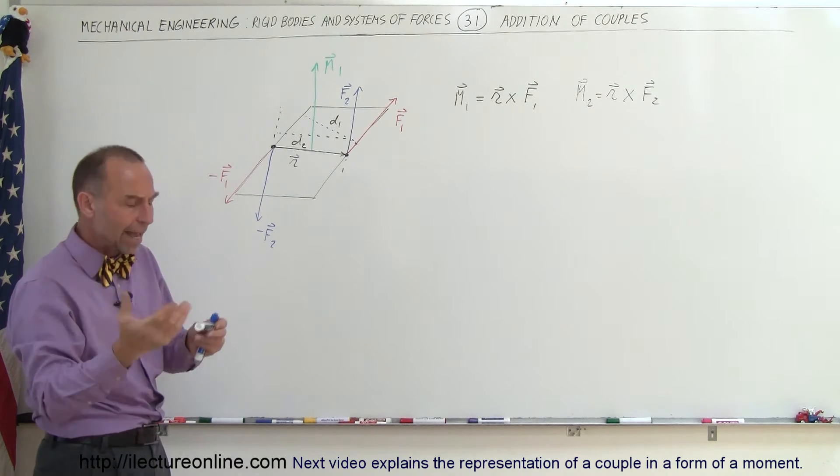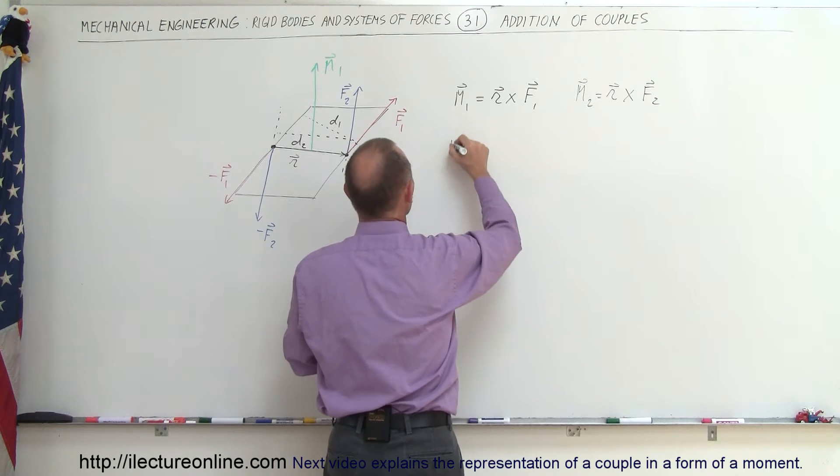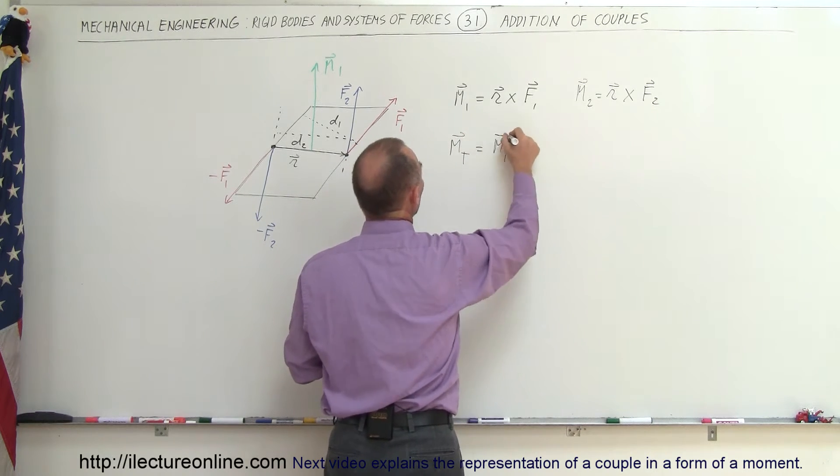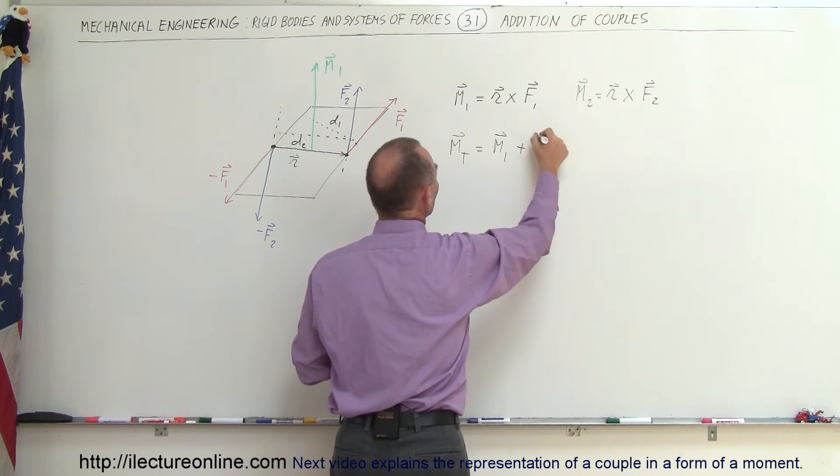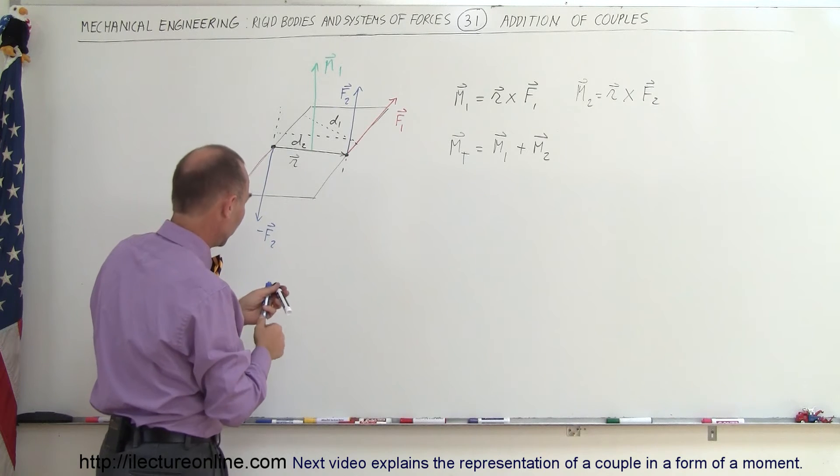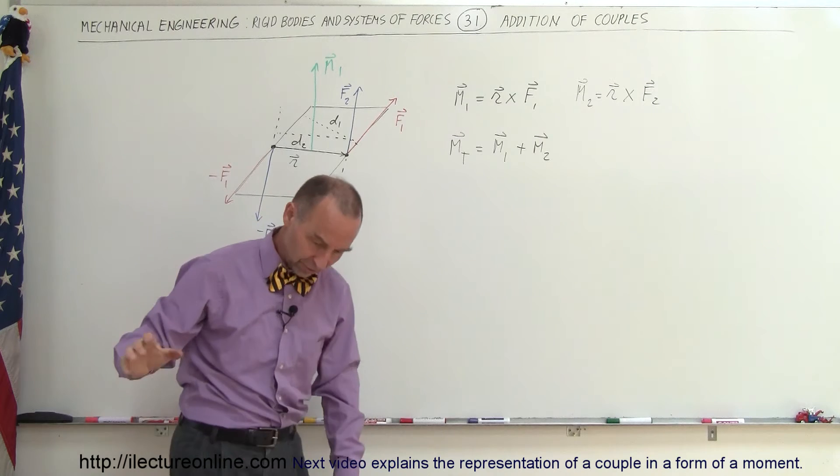So now the question is, how do you add the moments? How do you add M1 plus M2? So let's call it M total. M total is equal to the sum of M1 and M2. So since M1 and M2 are vectors, you can simply add the vector sum. So let's draw M2. I need a different color for that.